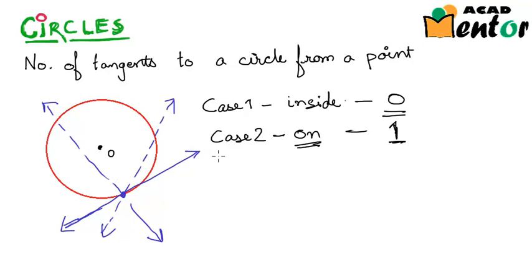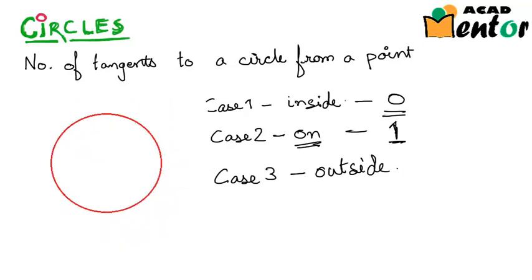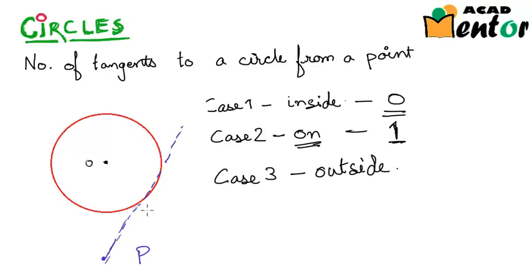So one tangent. Now let's look at the third case — case three — when the point is outside the circle. This is an interesting one. If this is a circle with center at point O and point P is outside, we can draw a line like this which touches the circle in just one point — that would be a tangent.